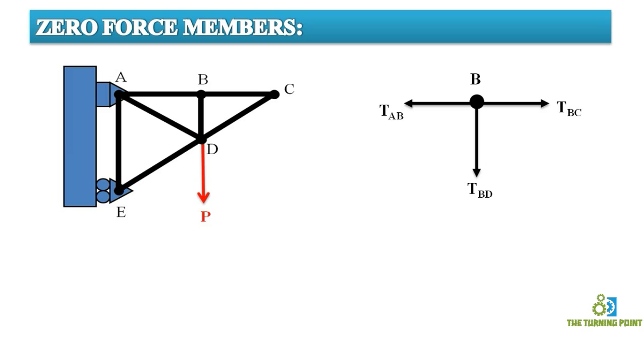So here joint B is subjected to three forces. If you observe, two forces are having a certain property which is nothing but collinearity. So tension along AB, tension along BC. So if you observe those two forces, they are collinear in action.